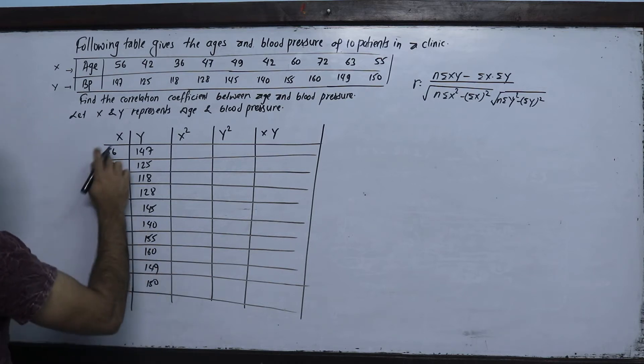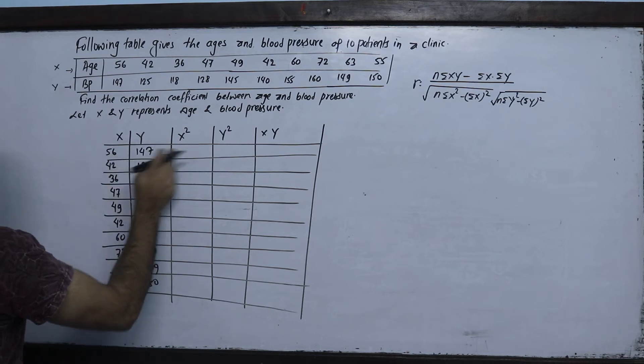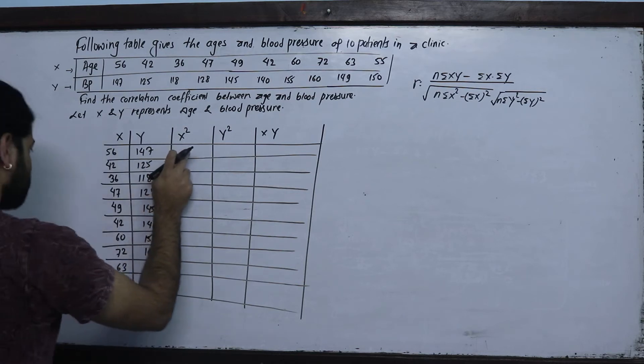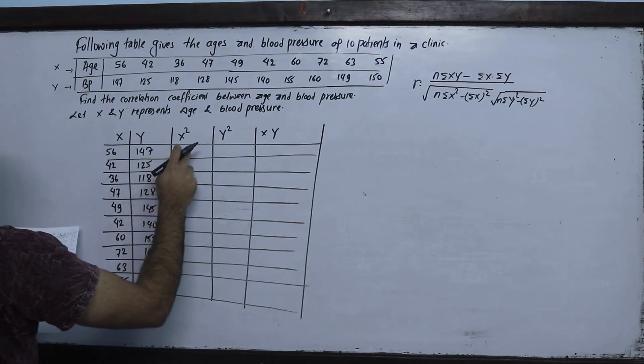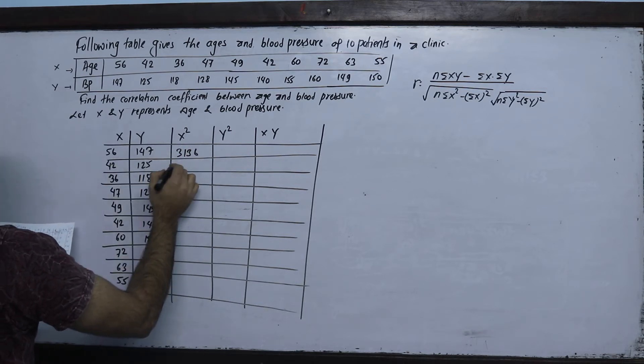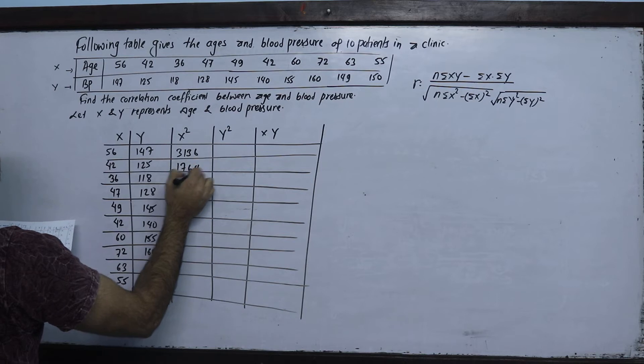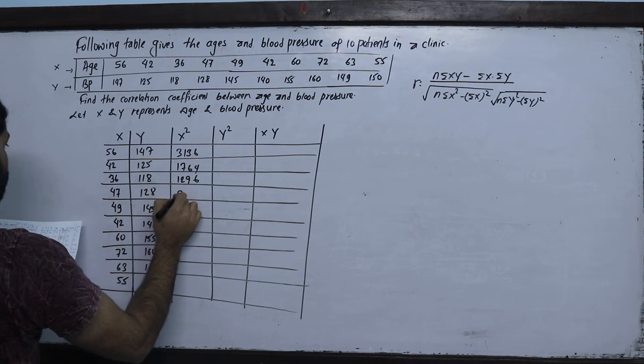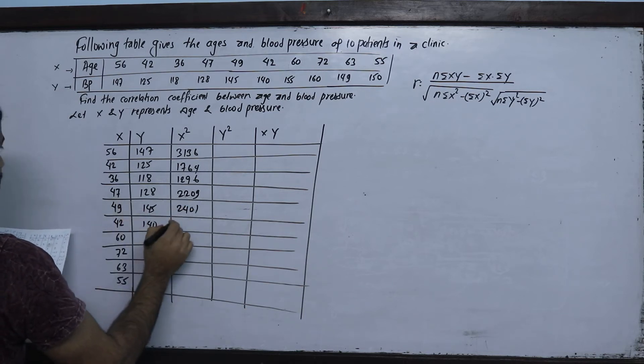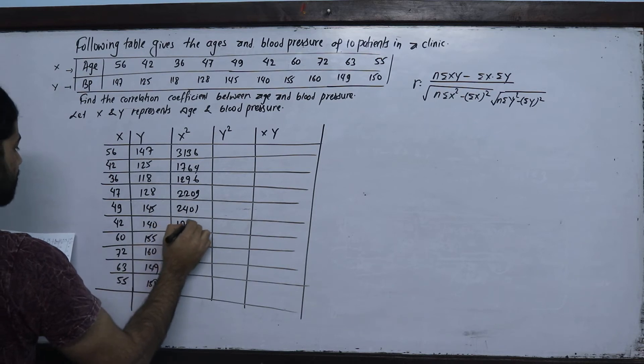Now we calculate x square. 56 square is 3136, 42 square is 1764, 36 square is 1296, 47 square is 2209, 49 square is 2401.